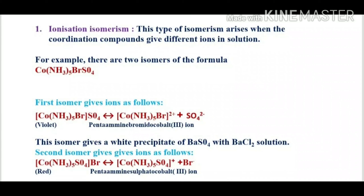For example, there are two isomers of the formula [Co(NH3)5Br]SO4. The first isomer is pentamine bromo cobalt(3+) ion, which is violet in color. When dissolved in water, it gives the complex species and sulfate ions.